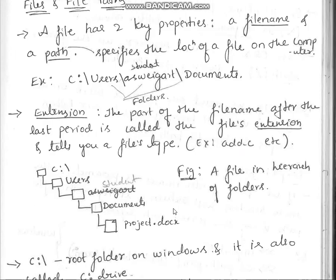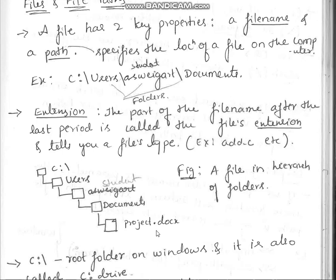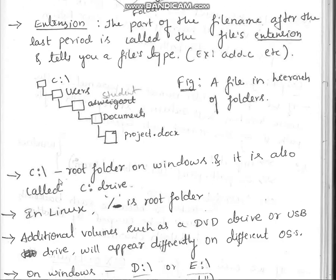See this diagram — it shows a file in a hierarchy of folders. The file 'project.docs' is present inside several folders: under the C drive we have a 'users' folder, inside that a 'swigart' or 'student' folder, then a 'documents' folder, and inside documents we have the file 'project.docs'.